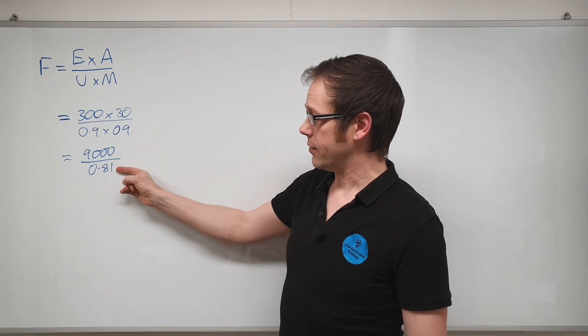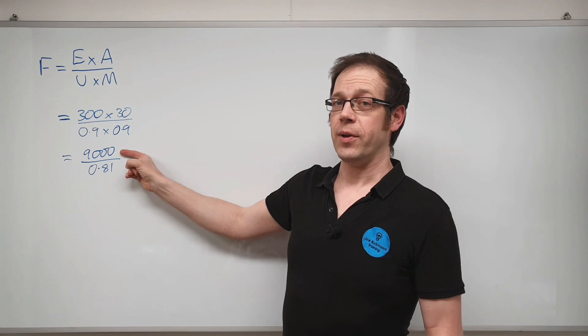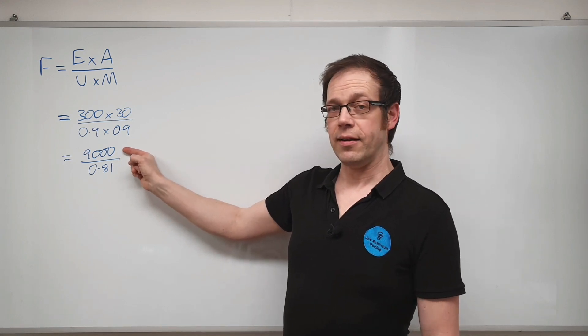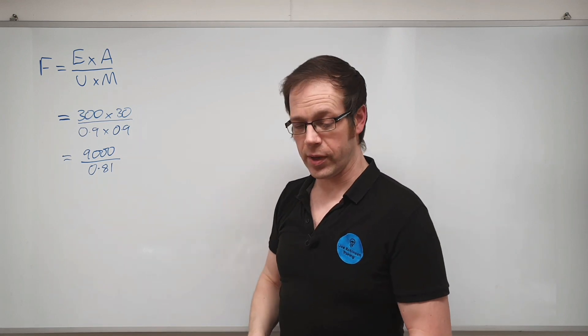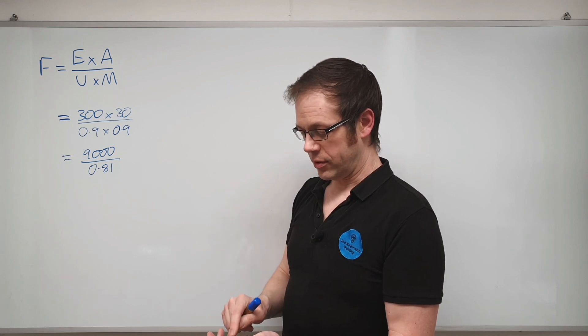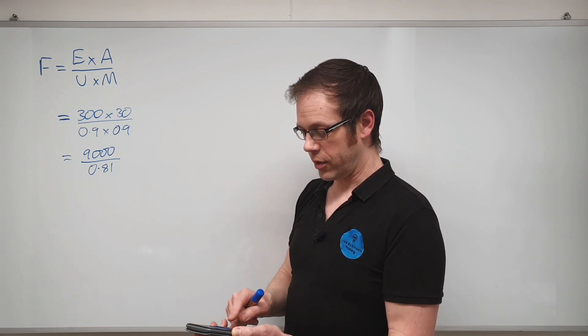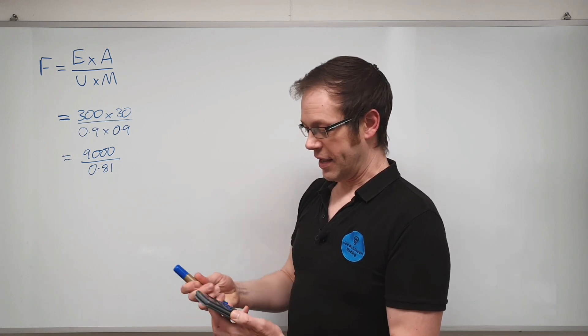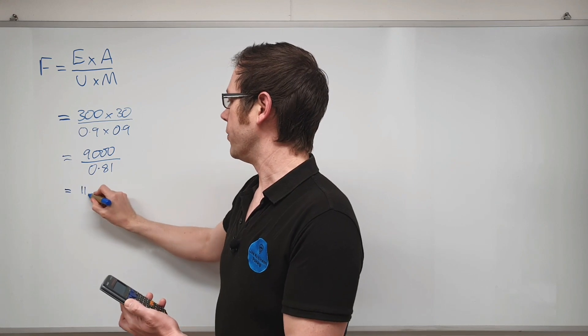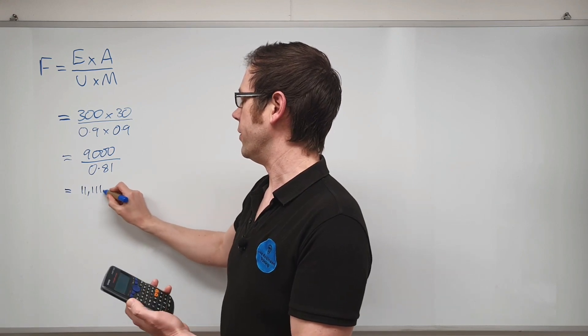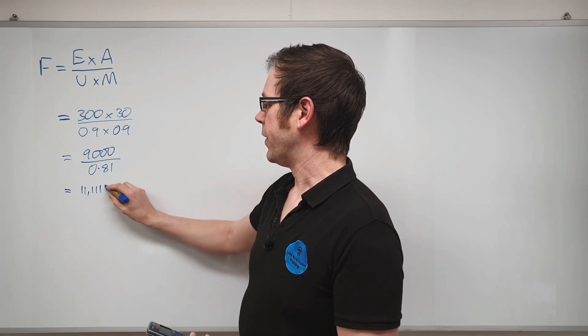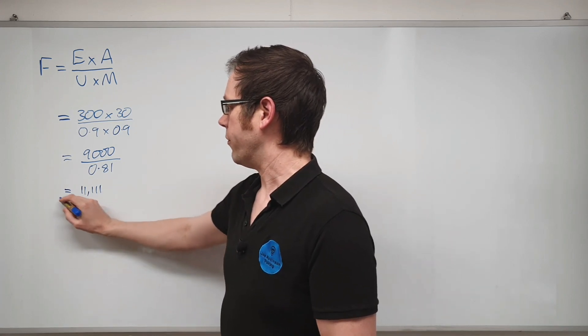Remember what you're doing is you're saying how many of these will fit into here. Well actually what's going to happen is you're going to end up with a number that is bigger than the number that you started with. So 9,000 divided by 0.81—let's see exactly what that value is. 9,000 divided by 0.81 is going to give us a value of, nice and conveniently, 11,111.1 recurring, so we'll just leave that at 11,111 for the purposes of this. And that, bear in mind, is our value for F.